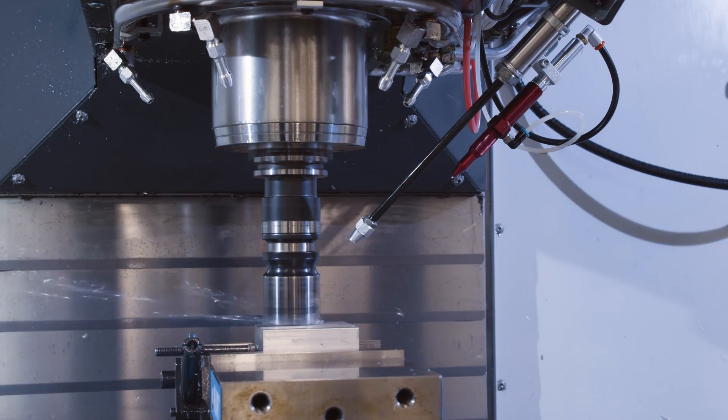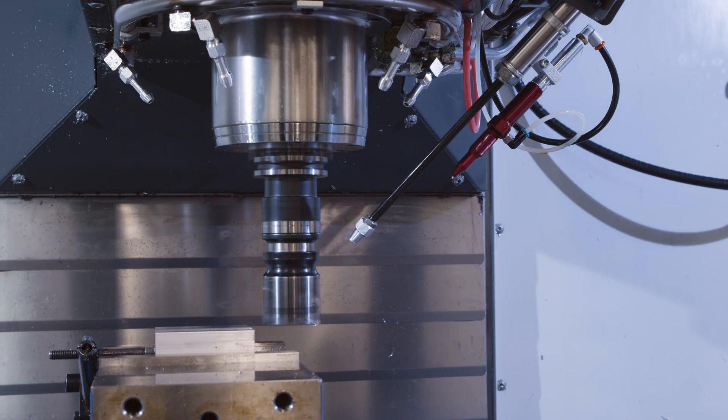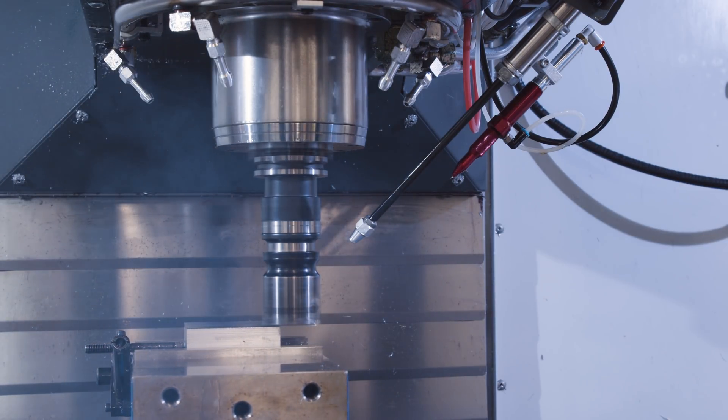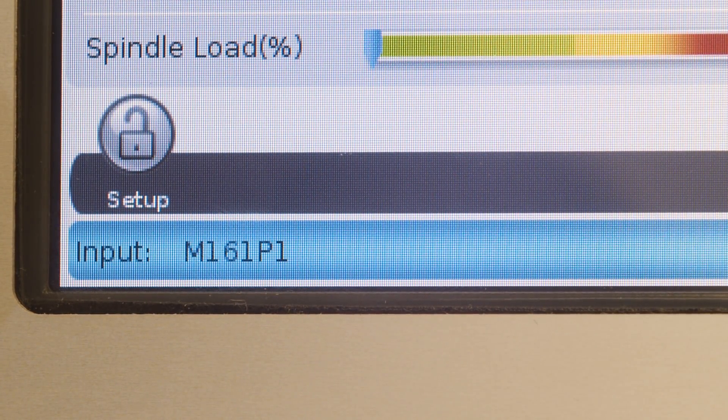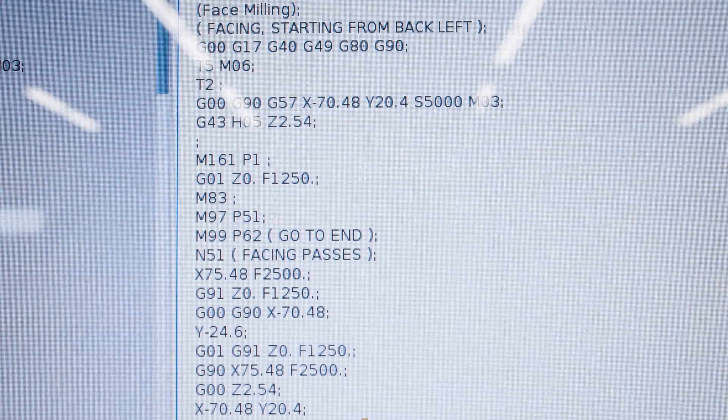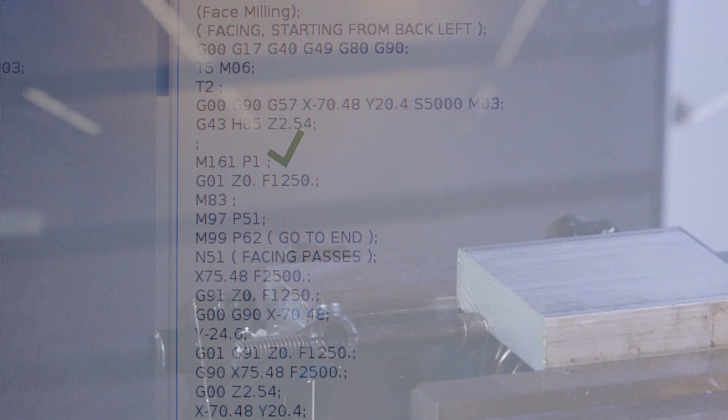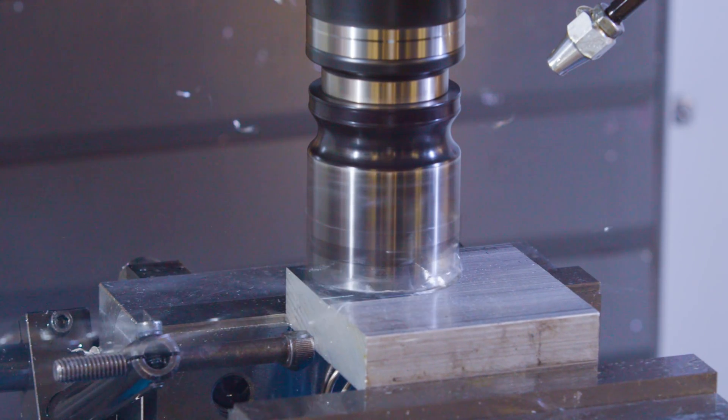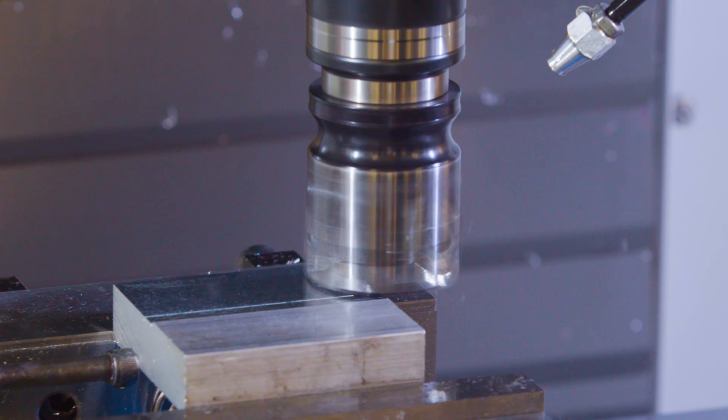Here, we have the face mill cleaning up the top of the block. Since we want the PulseJet to shoot continuously during feed moves, we add M161 P1 to our program before the end mill operation. P1 commands it to shoot once every second, or if you omit the P value, it defaults to setting 369.